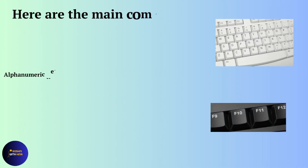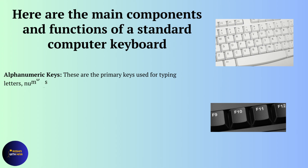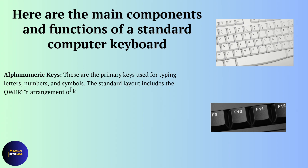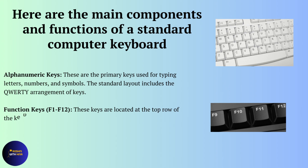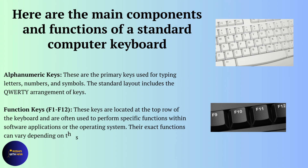Here are the main components and functions of a standard computer keyboard. Alphanumeric keys are the primary keys used for typing letters, numbers and symbols. The standard layout includes the QWERTY arrangement of keys. These keys include letters A to Z and numbers 0 to 9, as well as basic punctuation symbols. They are used for typing text and numbers into documents, emails and other applications.